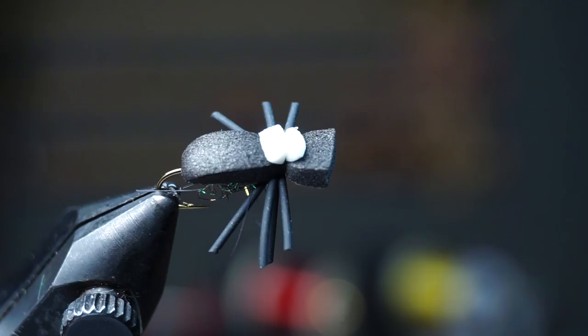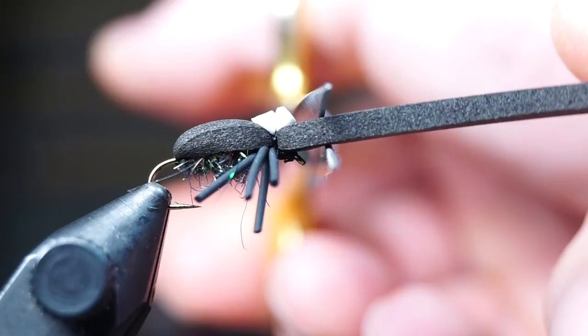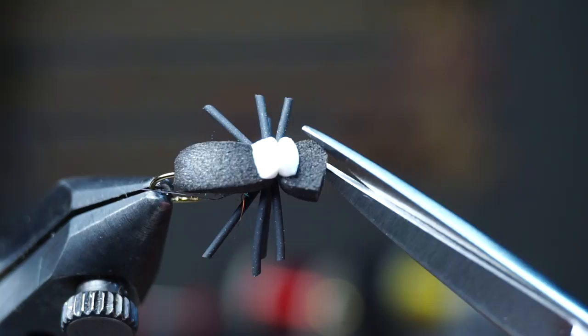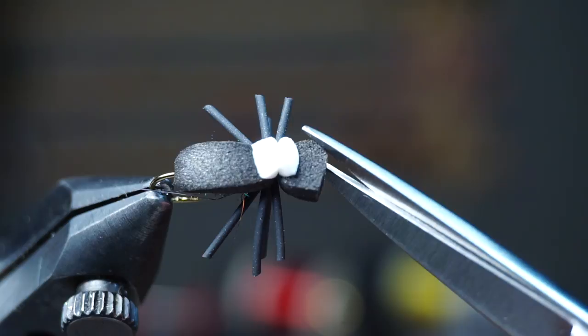Now you can make a head on the beetle. Cut the black foam off square and straight, and hopefully more straight than I did here. Now you can leave it straight, as many people do, or you can round off the head by cutting off the corners of the foam. This is up to you.